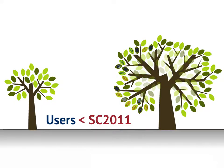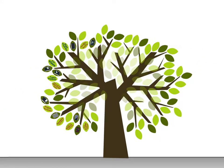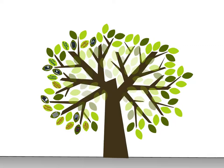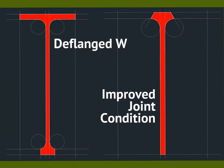So what are you missing? What are you not able to do that's actually very neat? Let's have a look at this 2012 Ship Constructor tree. We added new profile shapes — I'm looking at you, Huntington Ingalls. We now produce the capability to make profile shapes like D-flange Ws, which are just W shapes with lower flanges cut off, and improved joint conditions, which are T shapes being D-flanged according to parameters.